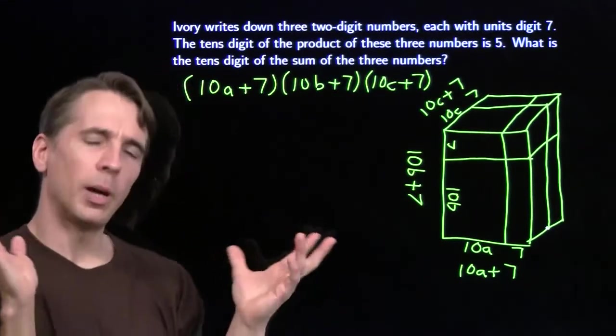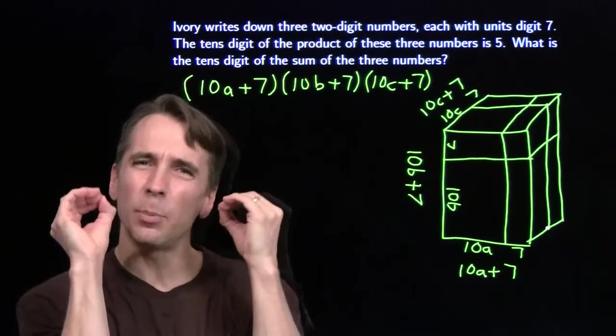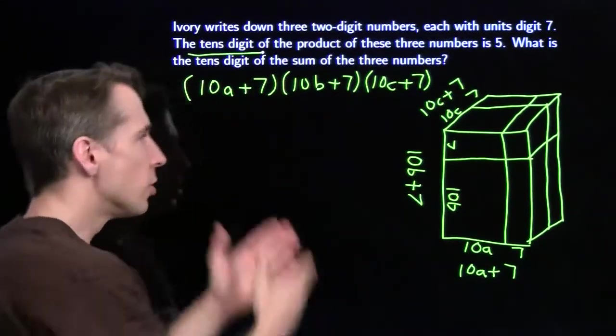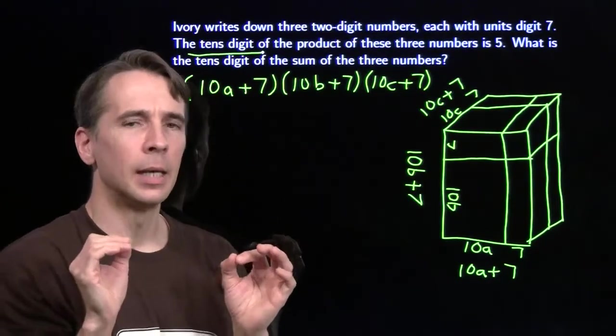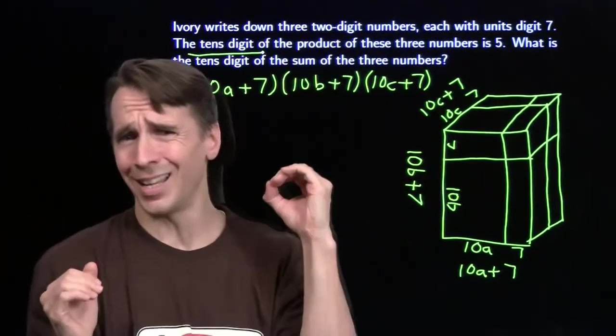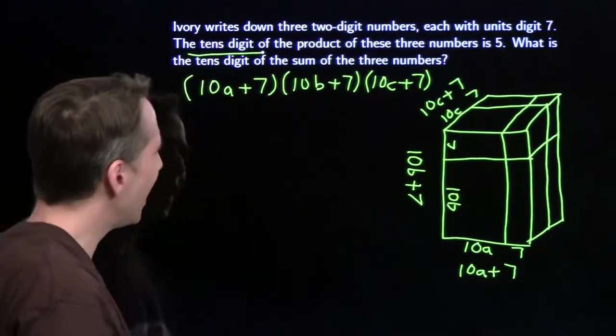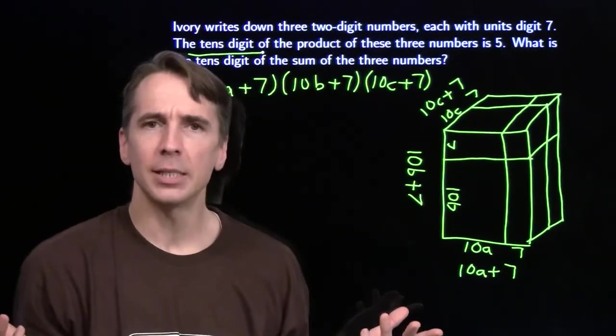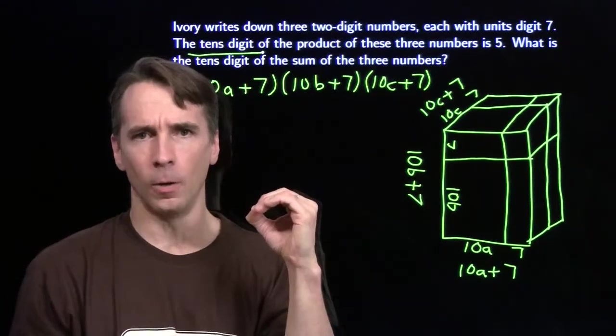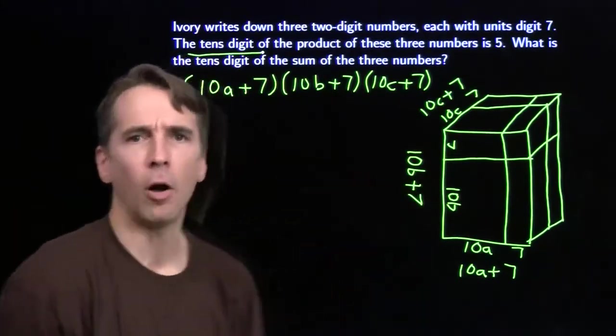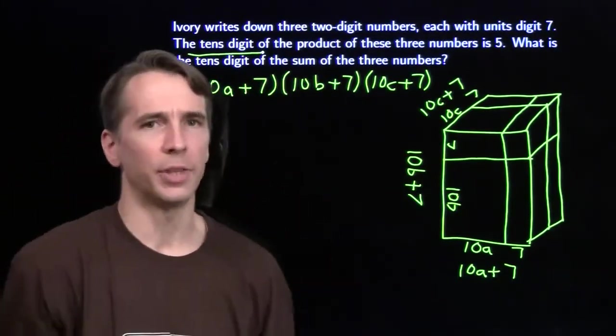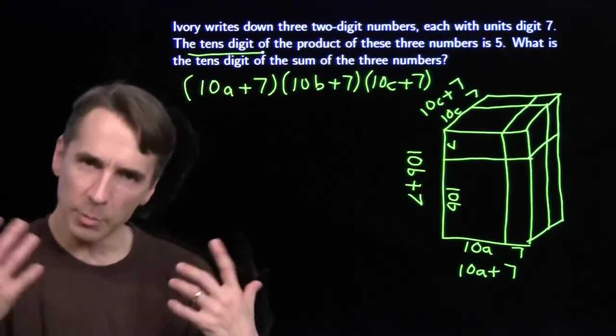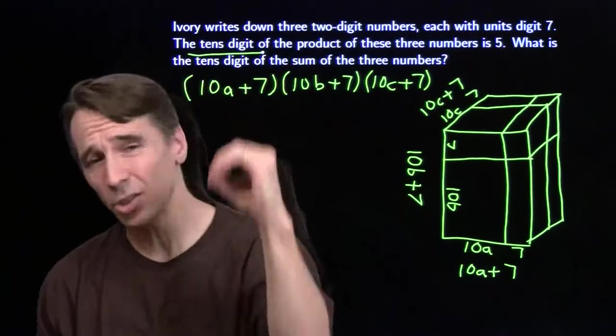We don't actually care about all of them. We have to keep our eye on the ball here. Look back at the problem. We care about the tens digit. So when we multiply this out, we only care about the pieces that give us a tens digit that's not zero. For example, if we started off taking 10a times 10b times 10c, we get 1,000 times abc. Well, the tens digit of that is going to be zero. It's not going to contribute anything at all to the tens digit of the product. So I don't care about that piece. Same thing if I go 10a times 10b times 7. That's going to give me 700 times ab. Tens digit's still going to be zero.